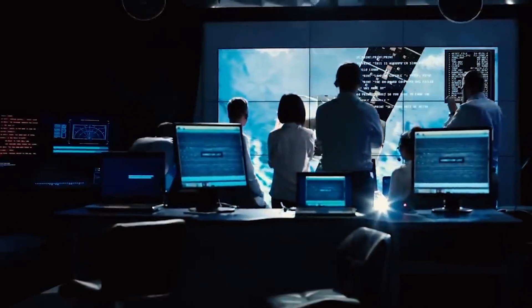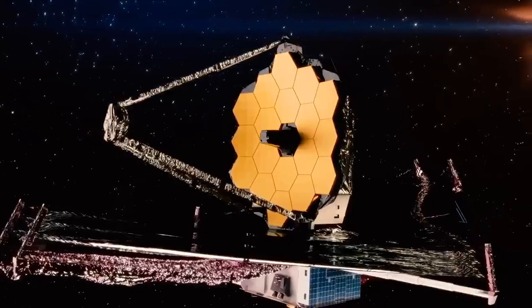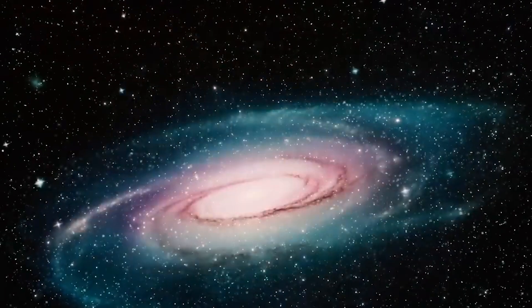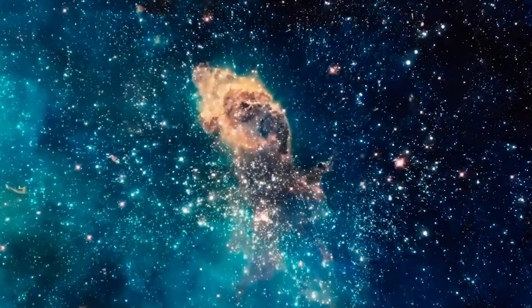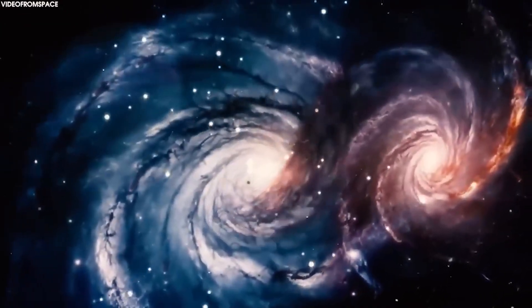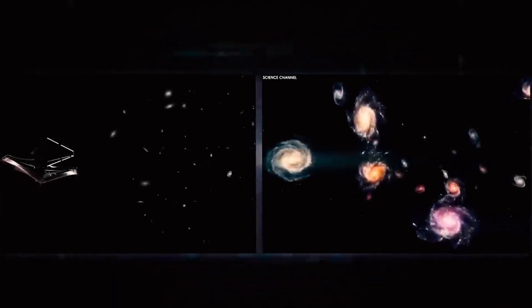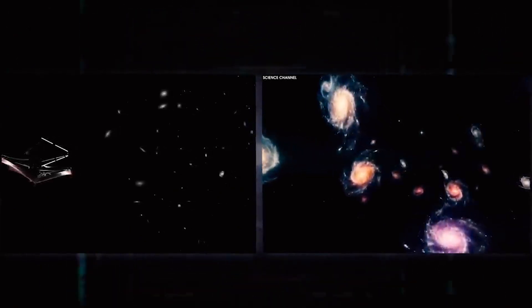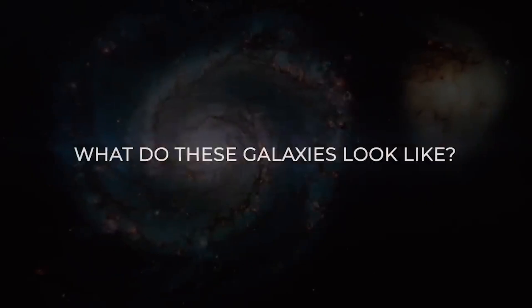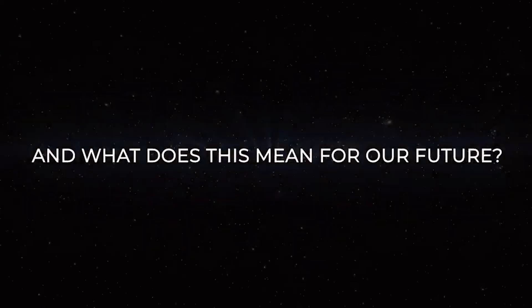Every day, NASA receives more data from the James Webb Space Telescope, and more data opens up the possibility of new discoveries. There are many mysteries in the universe, but none has been as puzzling as the presence of impossible early galaxies. Webb has detected 15 strange galaxies that existed before the Big Bang, challenging our current understanding of the origin and evolution of the universe. How is this possible? What do these galaxies look like? And what does this mean for our future?